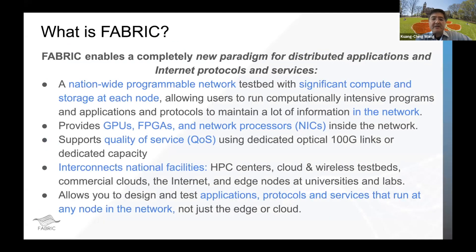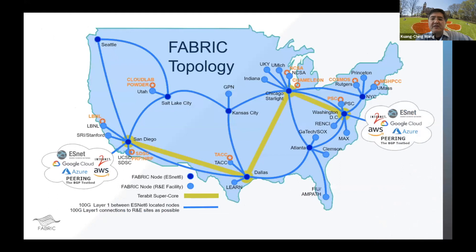FABRIC as a national programmable network really connects a lot of the elements that researchers may need to build interesting research topologies. You can have existing production-grade computing facilities and programmable network elements — whether smart NICs, network interfaces, or GPUs and FPGAs. We wanted it to be very easily composable — very simple to use. You can think of them as computing elements you can connect just like connecting PCI devices, making it easy to drag and drop only the resources you care about into an experiment.